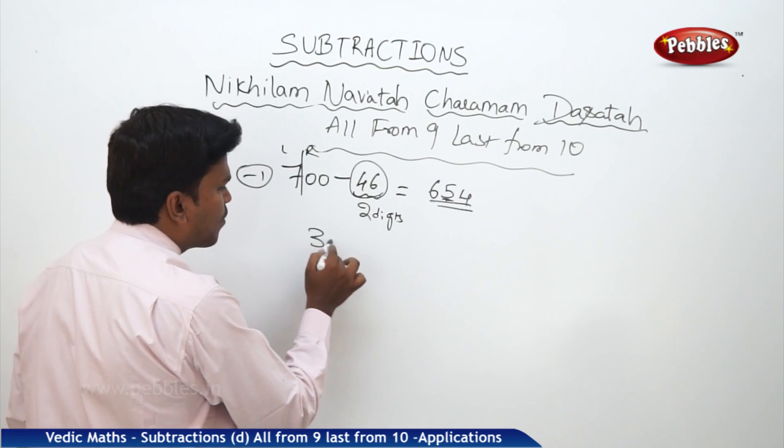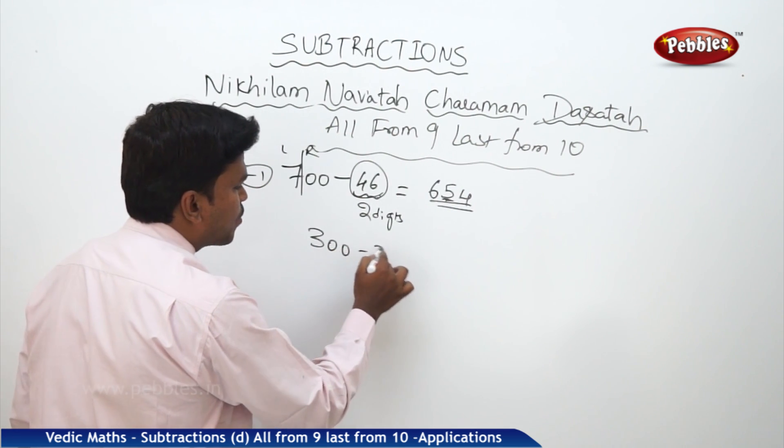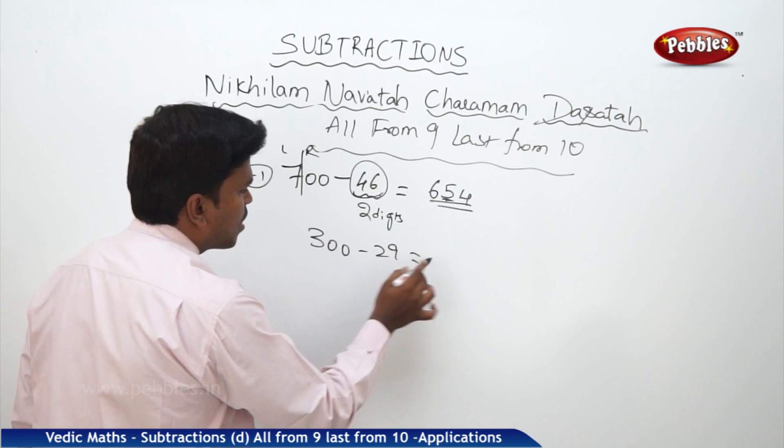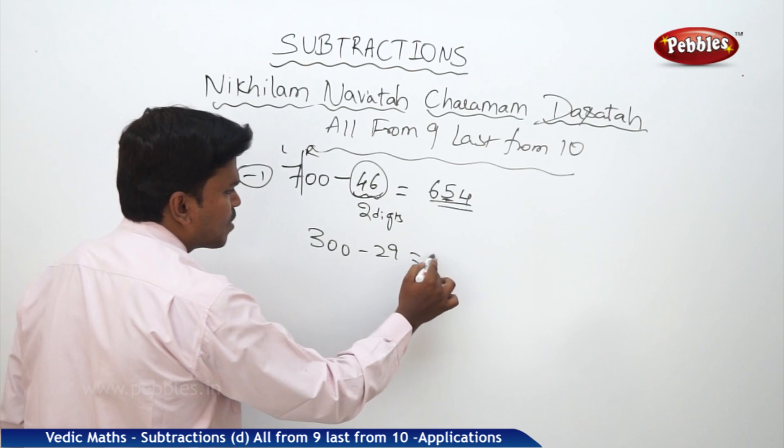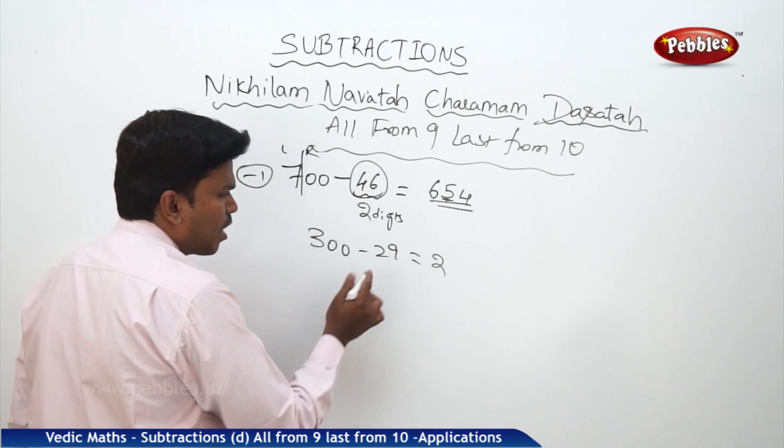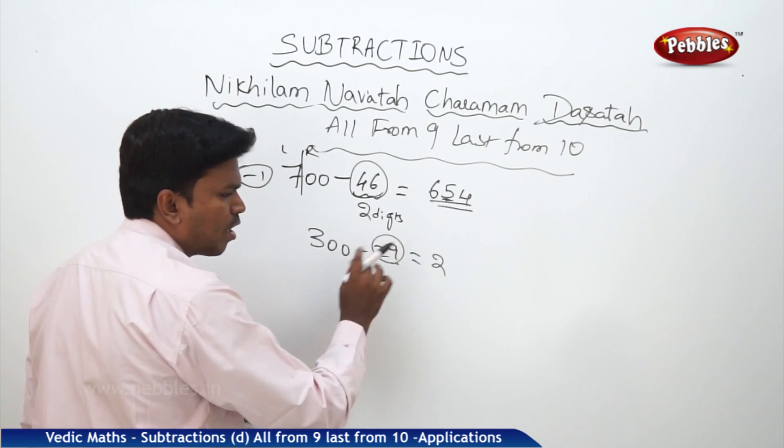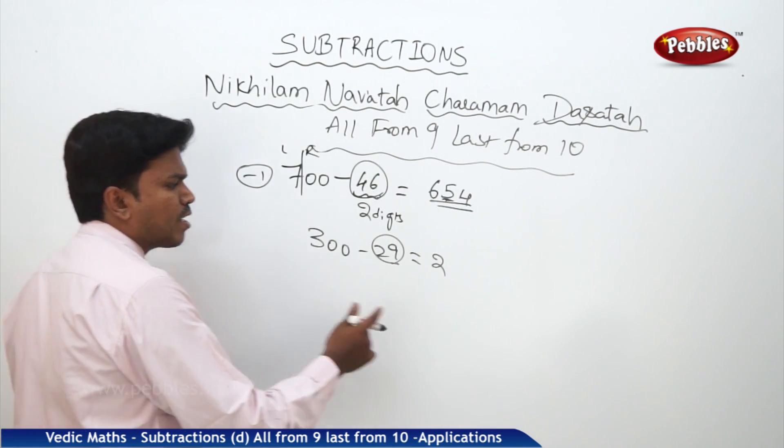One more example: 300 minus 29. The left part 3 becomes 2, and applying 'all from nine, last from ten' to 29 gives 7, 1. So my answer is 271.